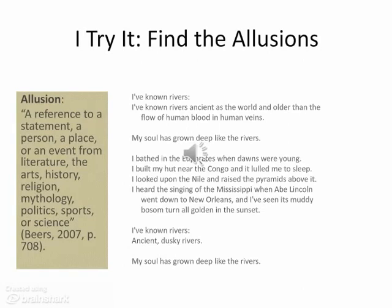At this point, I would start circling things I found in the poem, such as Euphrates, Congo, Nile, pyramids, Mississippi, Abe Lincoln, and New Orleans. I would do a think-aloud, saying: I know about the Euphrates and its significance because I was a history major in college, and I remember it was considered part of the birthplace of civilization, along with the Tigris River. So the speaker in this poem is ancient and has seen the rise and growth of civilization. I also understand almost intuitively the reference to the Nile and the pyramids, since I studied that history and visited Egypt in 2003. Prior knowledge and background knowledge is a very important part of understanding allusions.